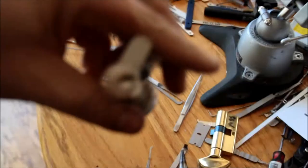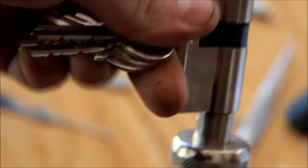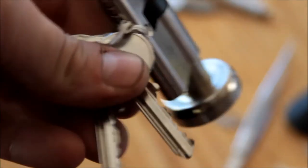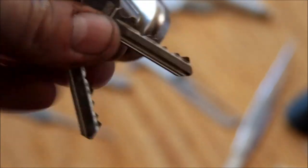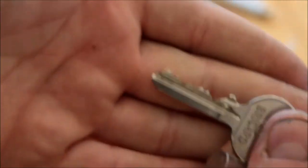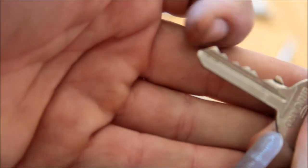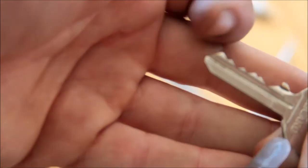So, this is a Bricard Euro thumb turn. There's the key. I think the bitting's easier to see from this side. There you go. So you can see one was pretty deep and then I got some other fun ones in there.